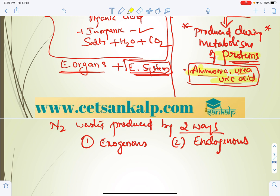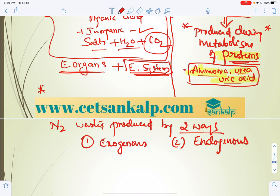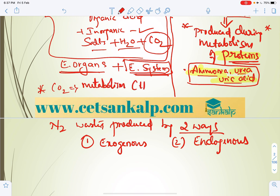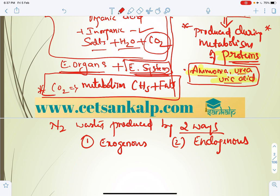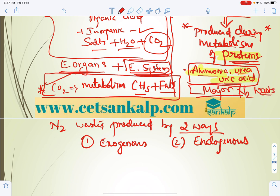Carbon dioxide is a metabolic waste produced during metabolism of carbohydrates and fats — it is not a nitrogenous waste. Excess water and salts are also considered excretory products. The major nitrogenous wastes — ammonia, urea, uric acid — are produced specifically during protein metabolism.